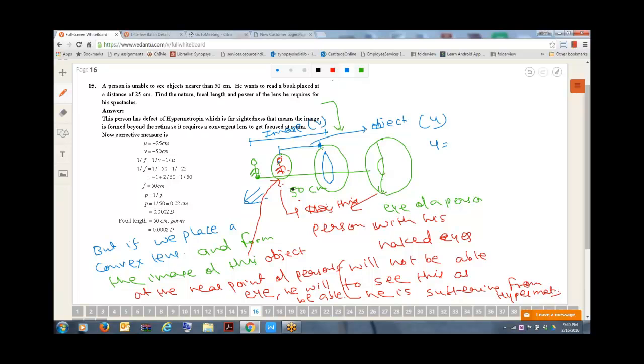We write object distance as, as I told you, this we have to take a negative and this we also have to take as negative. That is why we are taking U as minus 25 centimeter and V as minus 50 centimeter and we are applying this formula, 1 by F is equal to 1 by V minus 1 by U, that we have already seen so many times in our yesterday's session.